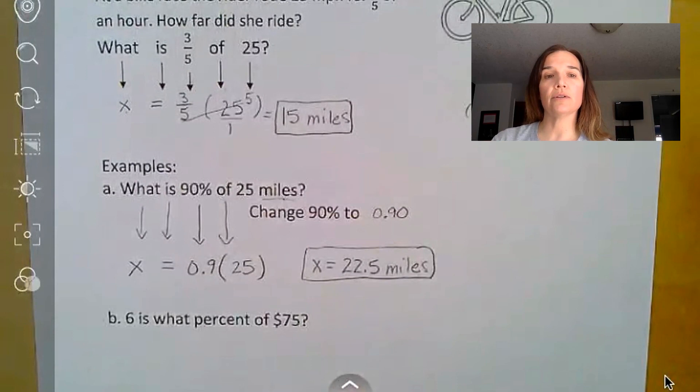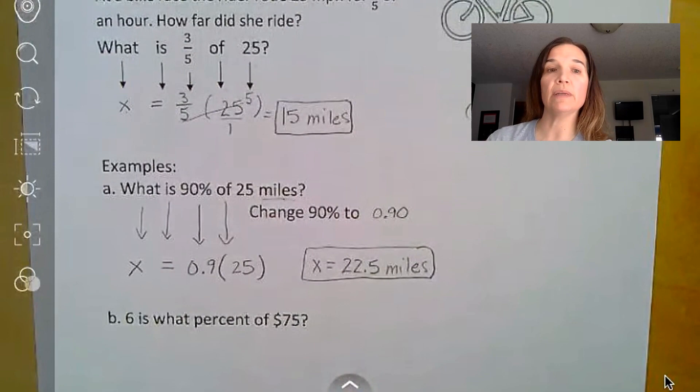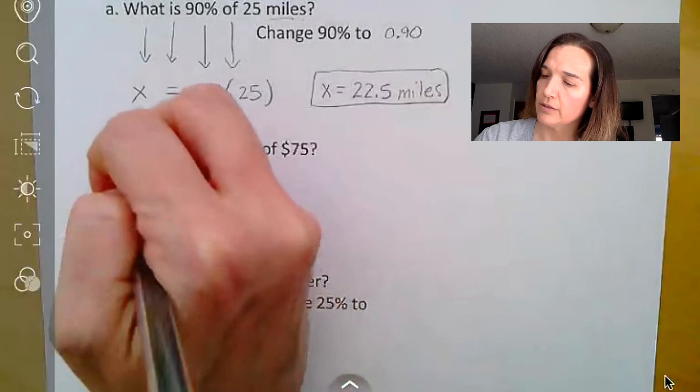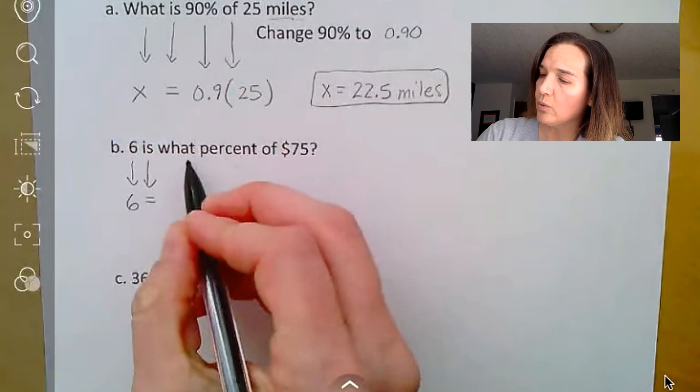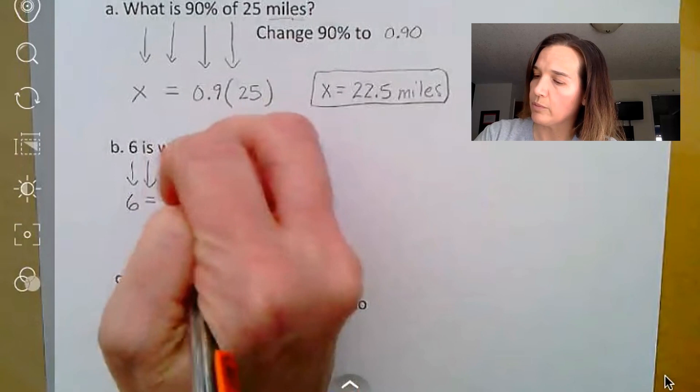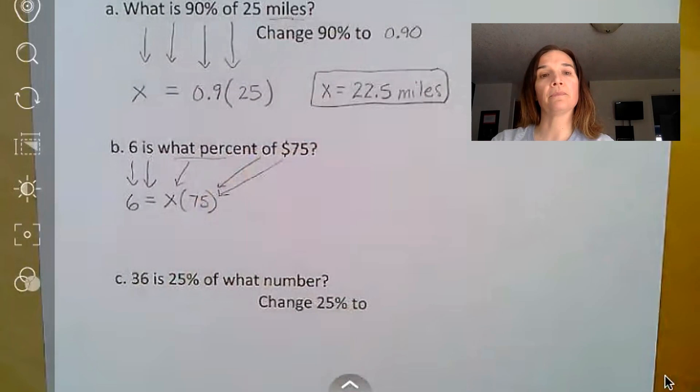All right, two other types of problems, and this time we're not missing the what is, we have that number, we're missing something else. And so in that case, what we need to do is still translate this into an equation. So 6 is the number 6. Is means equals still. What percent? We don't know the percent, so that's going to be our variable, our x. Of means to multiply, and then we have 75 there.